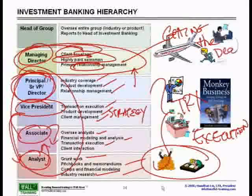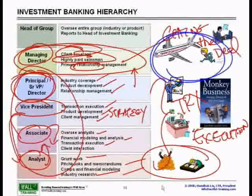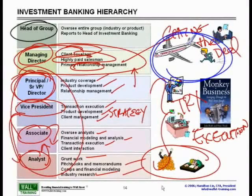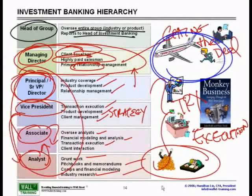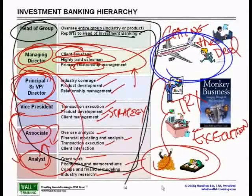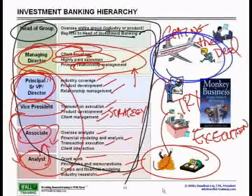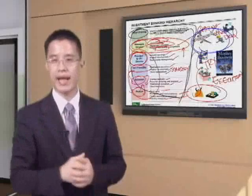The managing director's primary job is getting the deal — regardless of having the best and brightest bankers underneath. This means a fair amount of travel, schmoozing, and wining and dining with clients. You may also have a head of the group overseeing an entire industry or product division, reporting to the head of investment banking and responsible for the full P&L of that division.